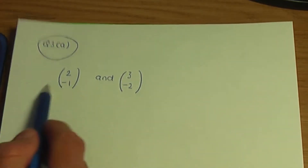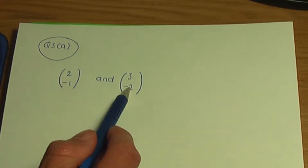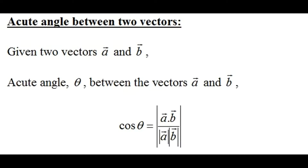Here are the column vectors given in part A. Now, looking at this screenshot to remind you: to work out the acute angle between two vectors A and B, the acute angle theta is given by the formula cos theta equals the absolute value of A dot B divided by the modulus of A times the modulus of B.